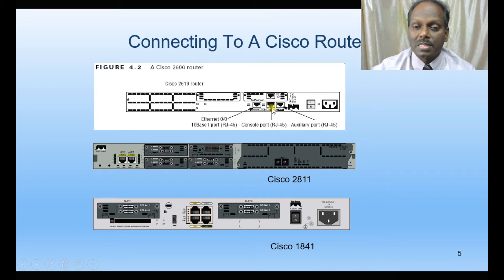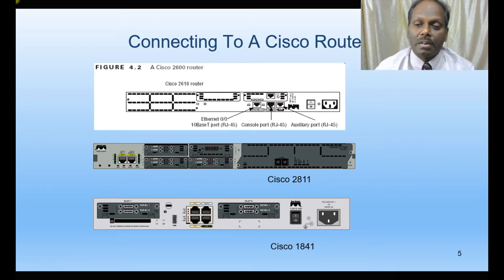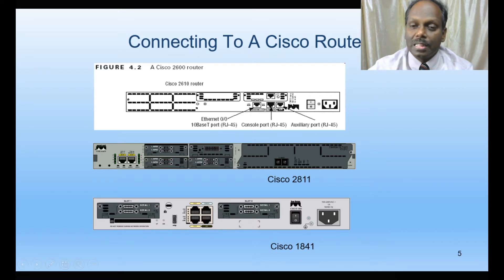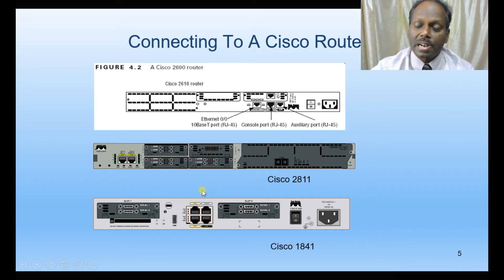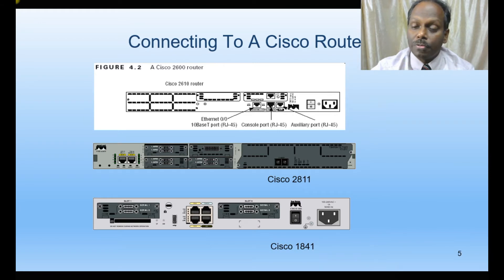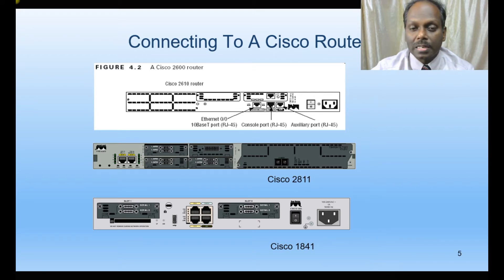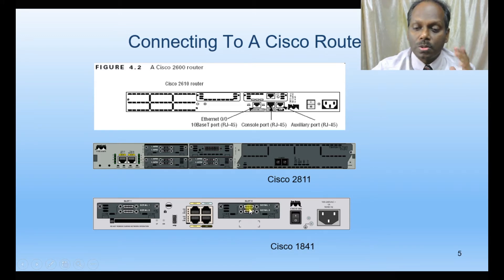We use a blue cable to connect to the console, similar to RS232. Next is the auxiliary port, mainly connected to a modem via RJ45 for remote access through telecommunications. These two are the primary access ports of the router. You also have Ethernet ports — fast Ethernet or Gigabit Ethernet — to connect your LAN. Normally every router has two Ethernet ports, plus serial ports (serial 1, serial 2) used to connect WAN ports over remote distances.